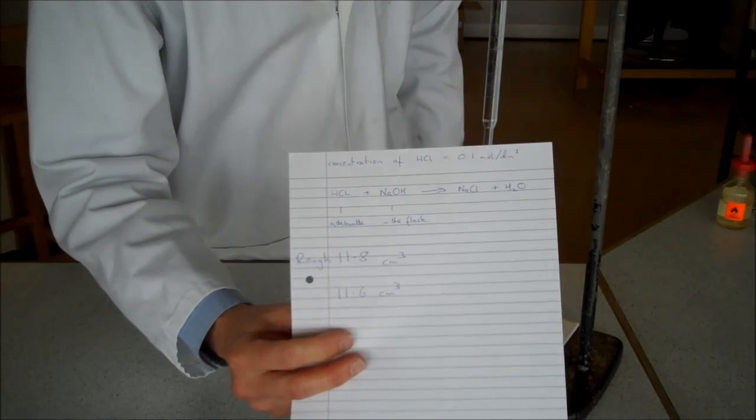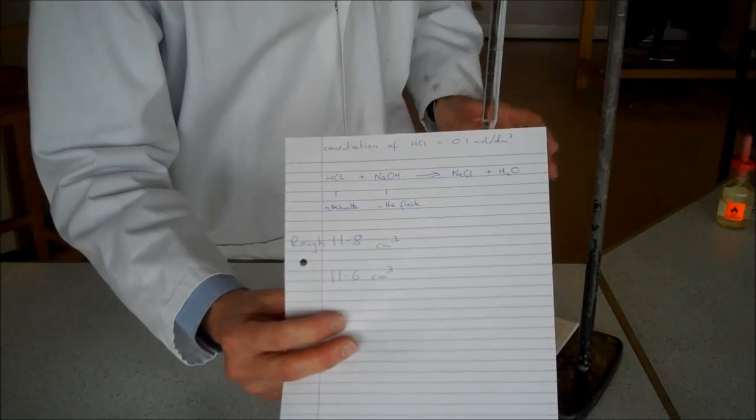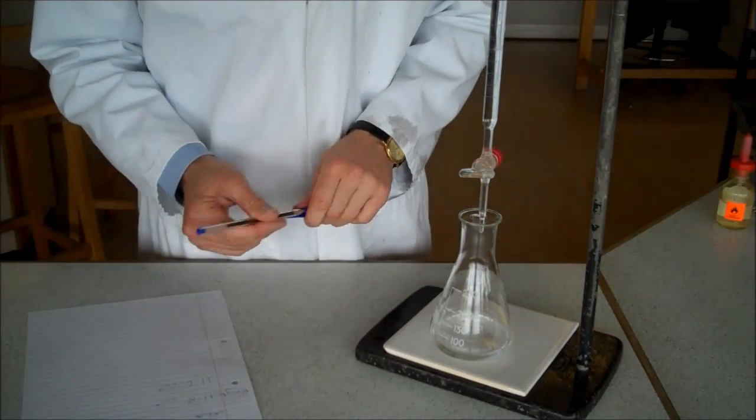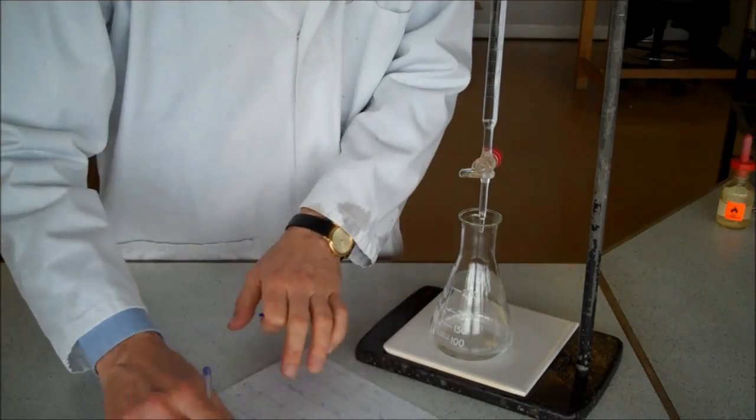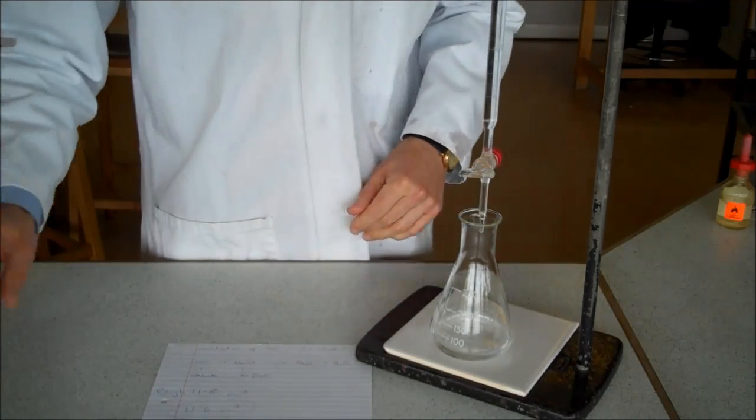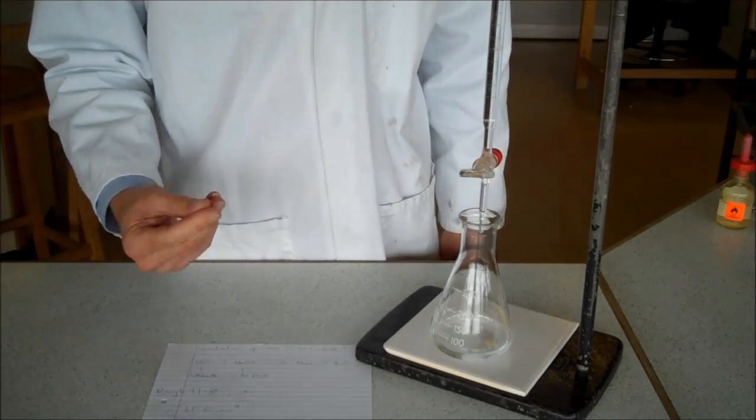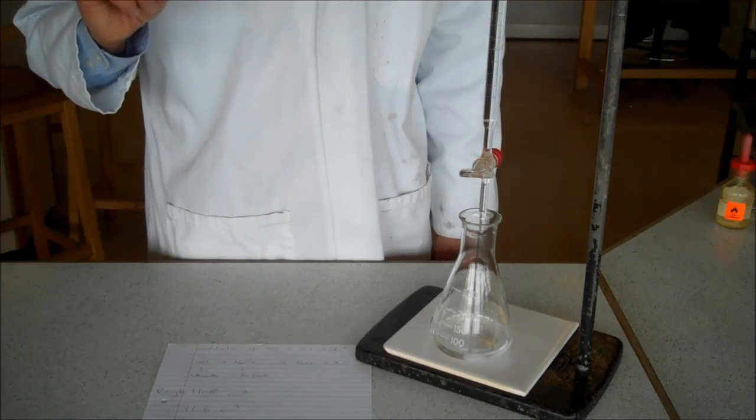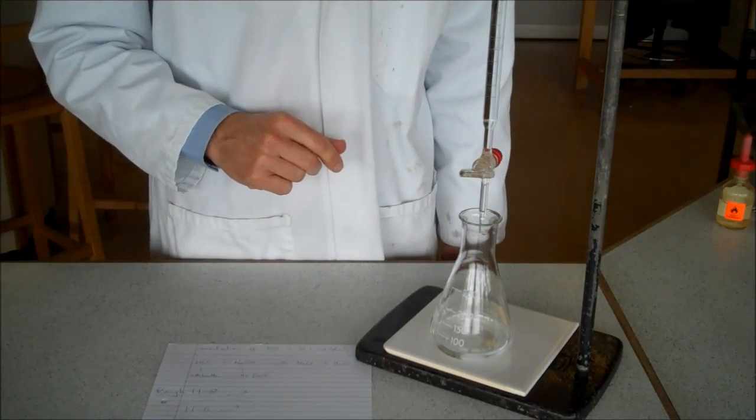What I would do now is repeat it again, exactly the same method as before, and hopefully my next repeat would be close to 11.6. And if it was close enough, I'd take an average, and that would give me a very accurate result for the volume of acid I needed to neutralise my alkali.